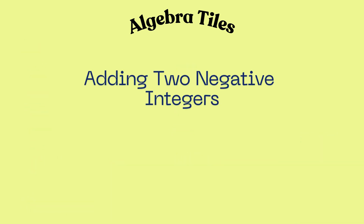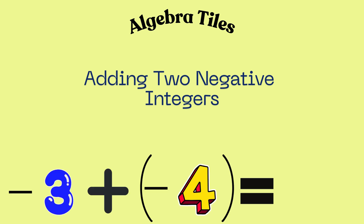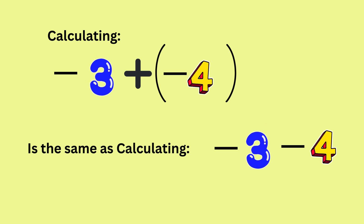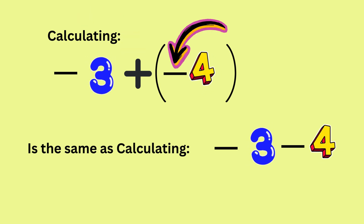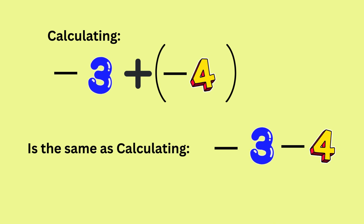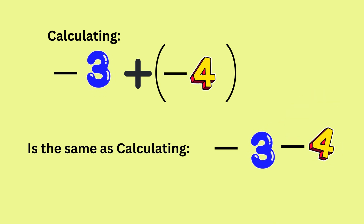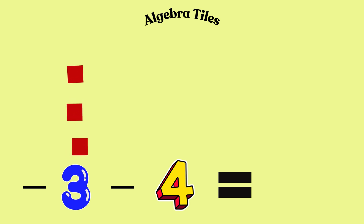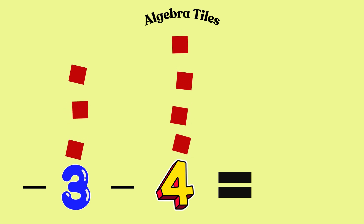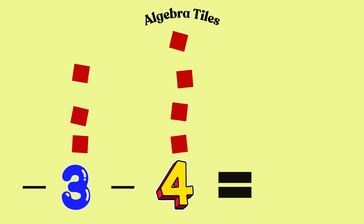Now let's try adding two negative numbers. Suppose we want to calculate negative 3 plus negative 4. By the way, this problem can also be expressed as minus 3 minus 4. Note that a positive sign and negative sign immediately beside each other will result in a negative sign. We will use three red tiles to represent negative 3 and four red tiles to represent negative 4. All together, we have seven red tiles.